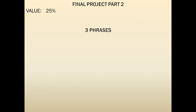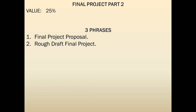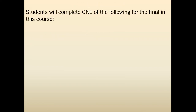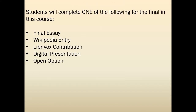In this part we'll be covering the other options for the final project. It's 25% of your grade, and it's due in three phases: the final project proposal, the rough draft final project, and the final project itself. You can take a look at the actual written guidelines for more details on what's expected. You have one of five options for this project. We talked about the final essay, and in this presentation we are going to talk about the Wikipedia entry, LibriVox contribution, digital presentation, and open option.